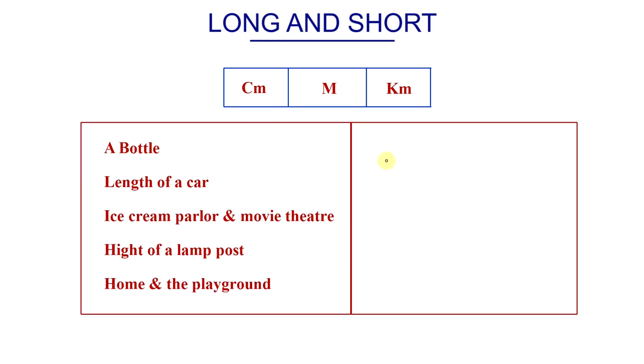Let's start with a bottle. Centimeters? Good! Okay, let's go to the next one. Here's the length of a car. Using a meter rod. Distance between the ice cream parlor and the movie theater. Kilometers!